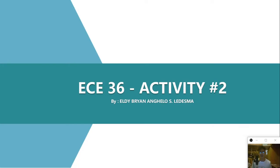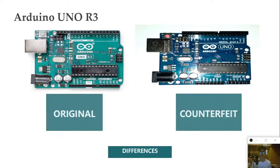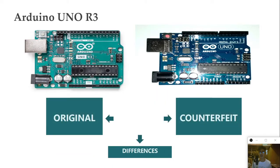Hi everyone, my name is Ezebrenuelo Esedasma from EES ECE3B and this is my presentation on ECE36 activity number 2. In this presentation we will talk about Arduino UNO R3 and we will distinguish the original and the counterfeit Arduino UNO R3 and its differences.